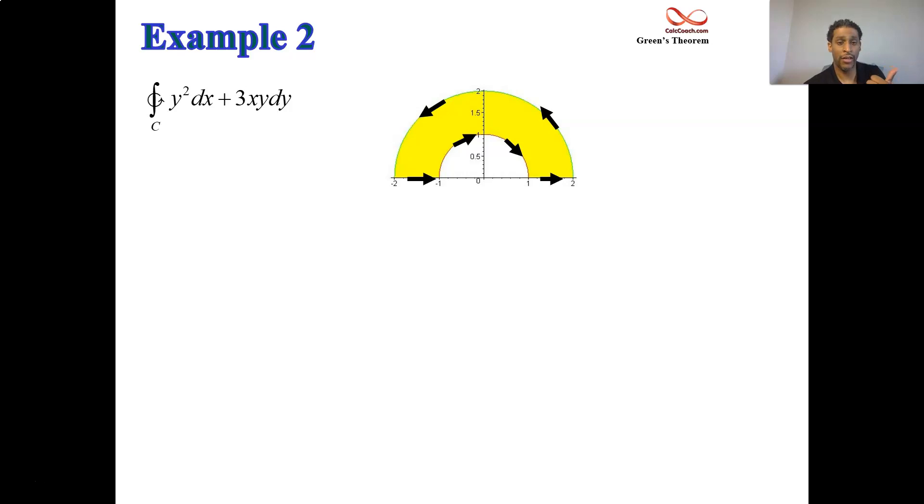So the curve is closed, the curve is positively oriented, the curve is piecewise smooth, and the curve is simple. When your curve fits those four qualities and the vector field f consists of components p and q that are both continuous and their partials are continuous inside the region, then you can employ Green's Theorem and trade this in for a double integral.